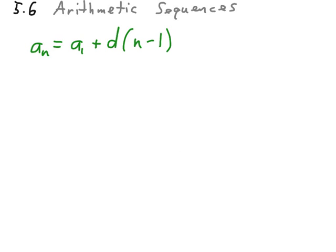The main form for writing an arithmetic sequence is a sub n equals a sub 1 plus d times n minus 1. Let's look at each of these parts. a sub n really doesn't change. That's what our answer is going to be as we run through the formula. a sub 1 is the first term of the sequence. d is the common difference that exists in the sequence.